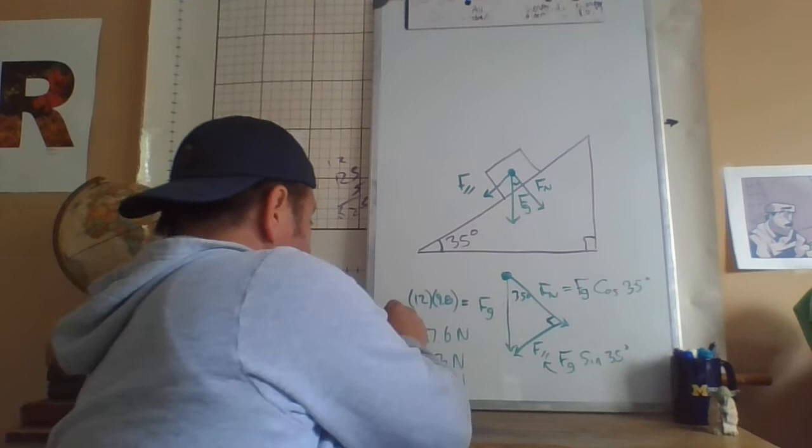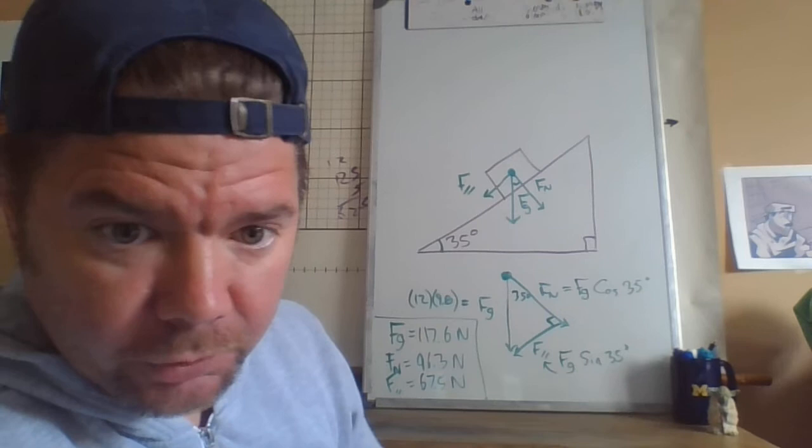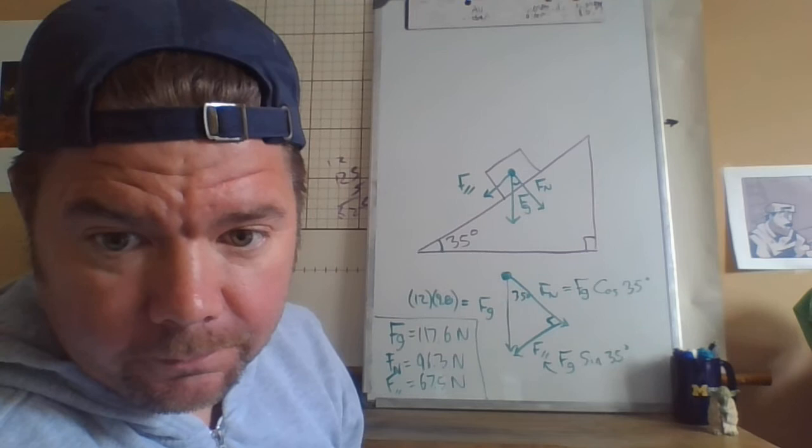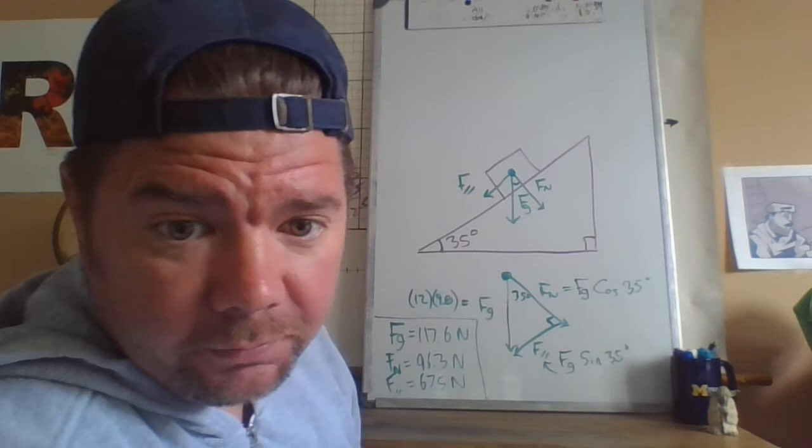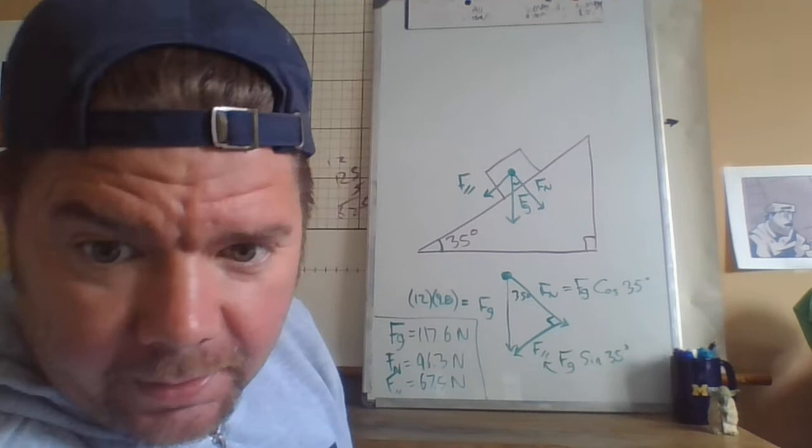Okay, all right. So that was a lot. So maybe it makes sense right now to just kind of summarize where we are and where we're trying to go. Remember we're trying to figure out will this box slide or will it stay where it is. Well we know one of the forces that's going to try to pull it down is the force parallel, 67.5 newtons. What's working against that?